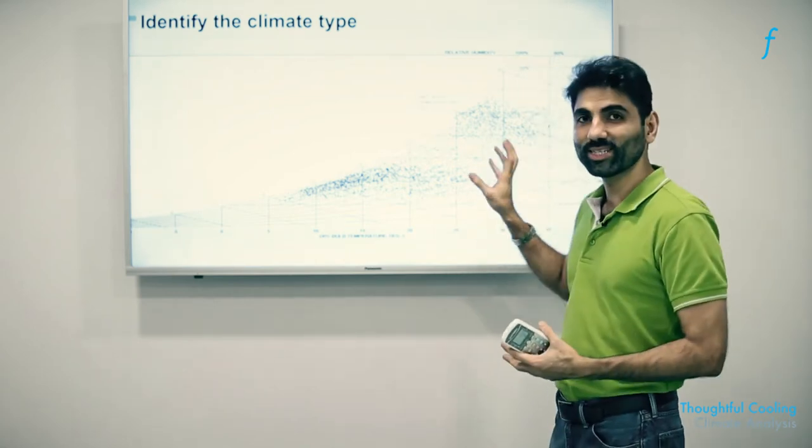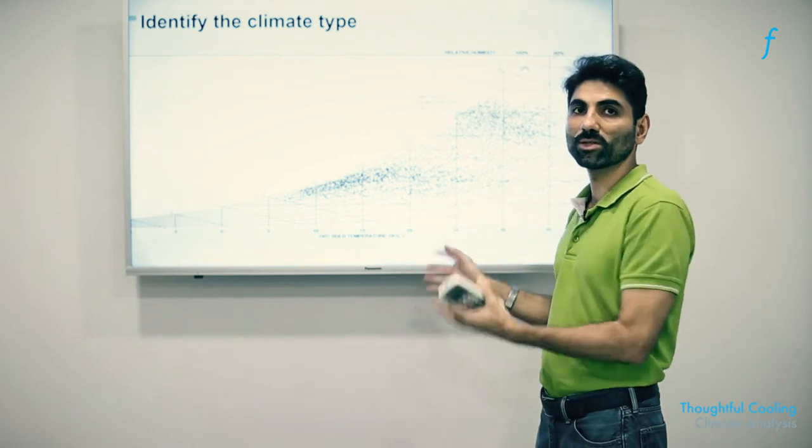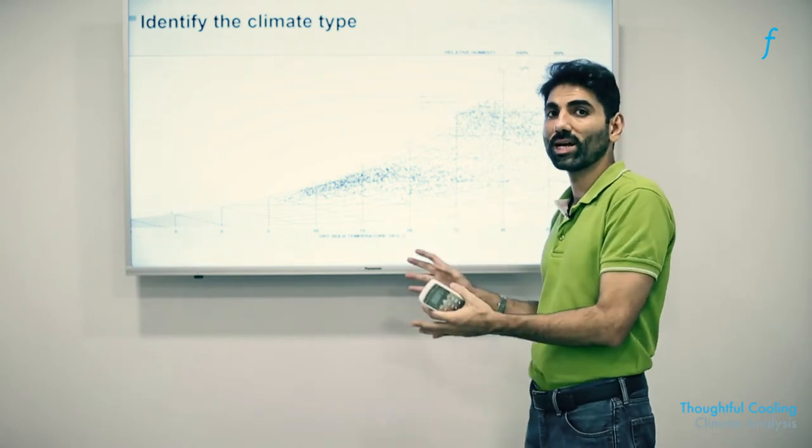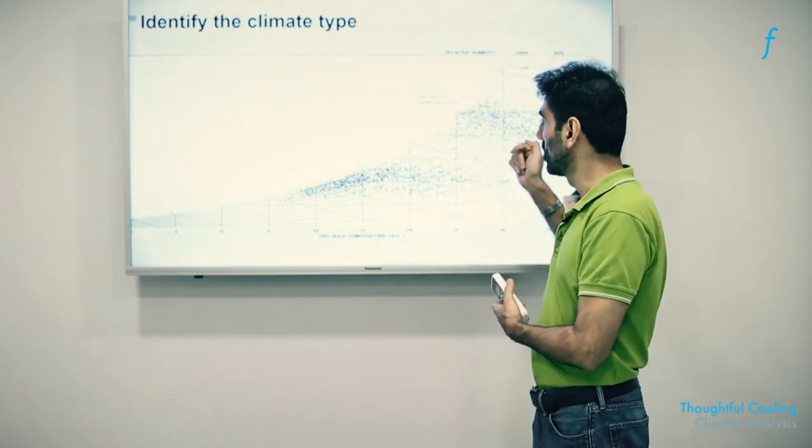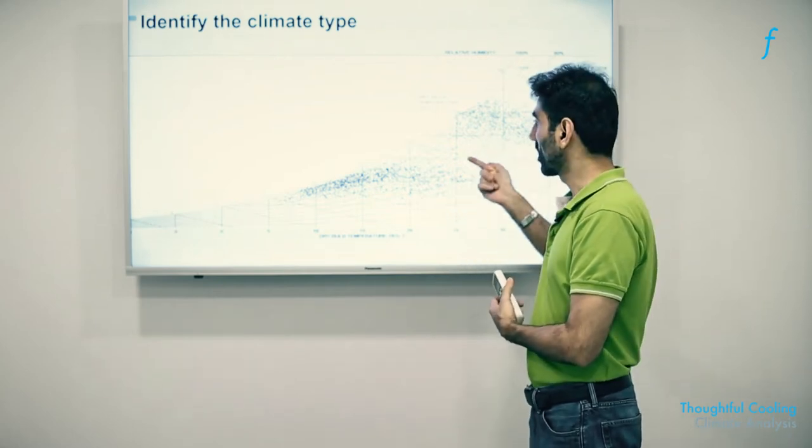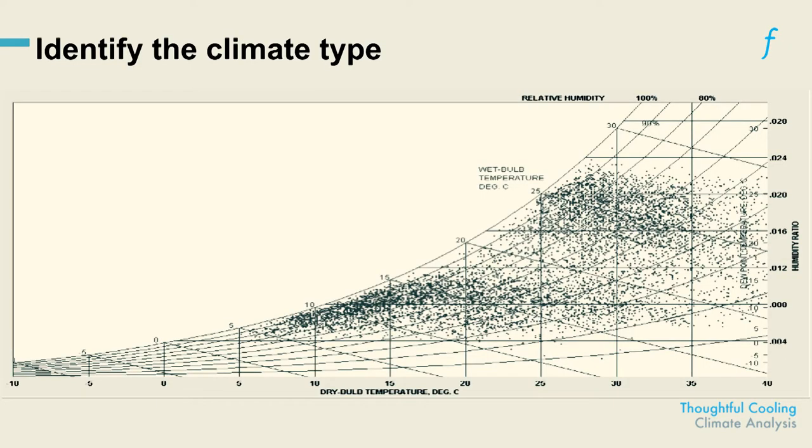We might not be able to nail down which city this is, but we should certainly be able to say which city this is most likely not. For example, this cannot be Chennai. This most likely is a chart for something like Delhi or perhaps something like Pune, which could be considered a composite climate zone chart.